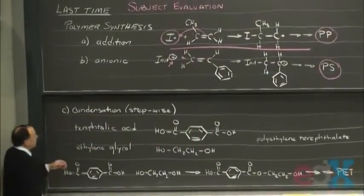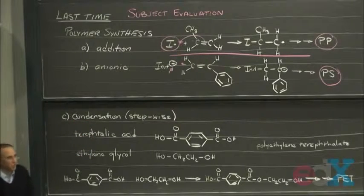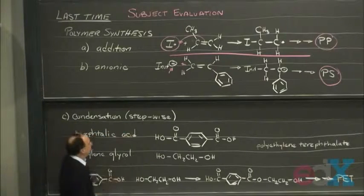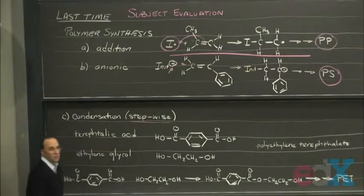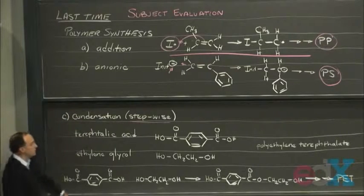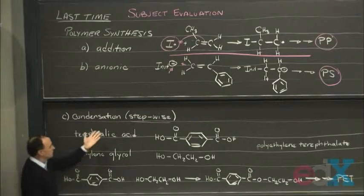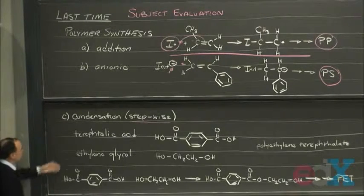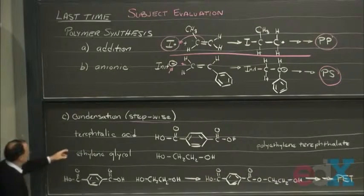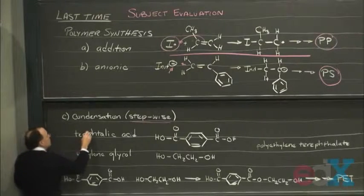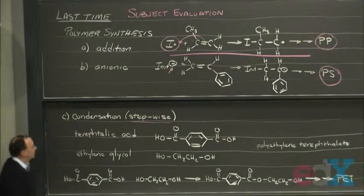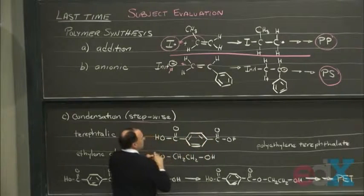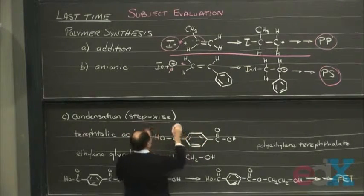And the last one we're going to talk about is what's called condensation. We mentioned this just a little bit at the end when we talked about RTV. Condensation, or in your reading, they sometimes call it stepwise. Because condensation technically has to do with water, but you can produce alcohol or water or any number of things. But in the case I'm going to describe here, this is terephthalic acid. It's a dibasic acid. It's got a benzene ring in the middle. And what I mean by dibasic acid is it has two carboxylic acid groups on it.